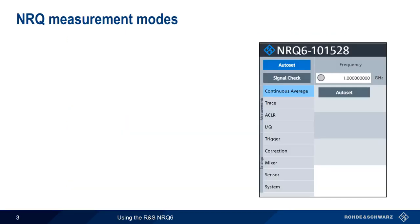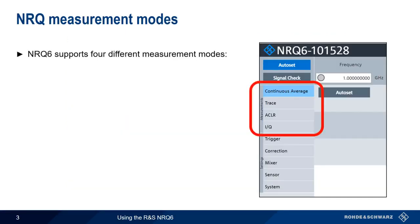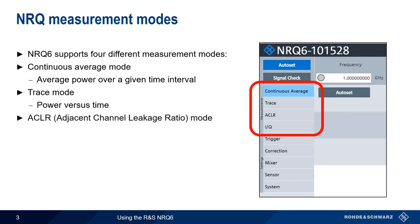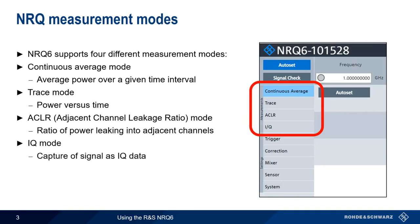The NRQ supports four different measurement modes. The first is Continuous Average Mode, which provides a numerical value for the power measured over a given time interval. Trace Mode plots power versus time, and is useful when looking at pulsed or other time-varying signals. ACLR, or Adjacent Channel Leakage Ratio, is used when measuring the amount of power that leaks into neighboring or adjacent channels. Lastly, IQ Mode is used to capture measured signals as IQ data for offline analysis.